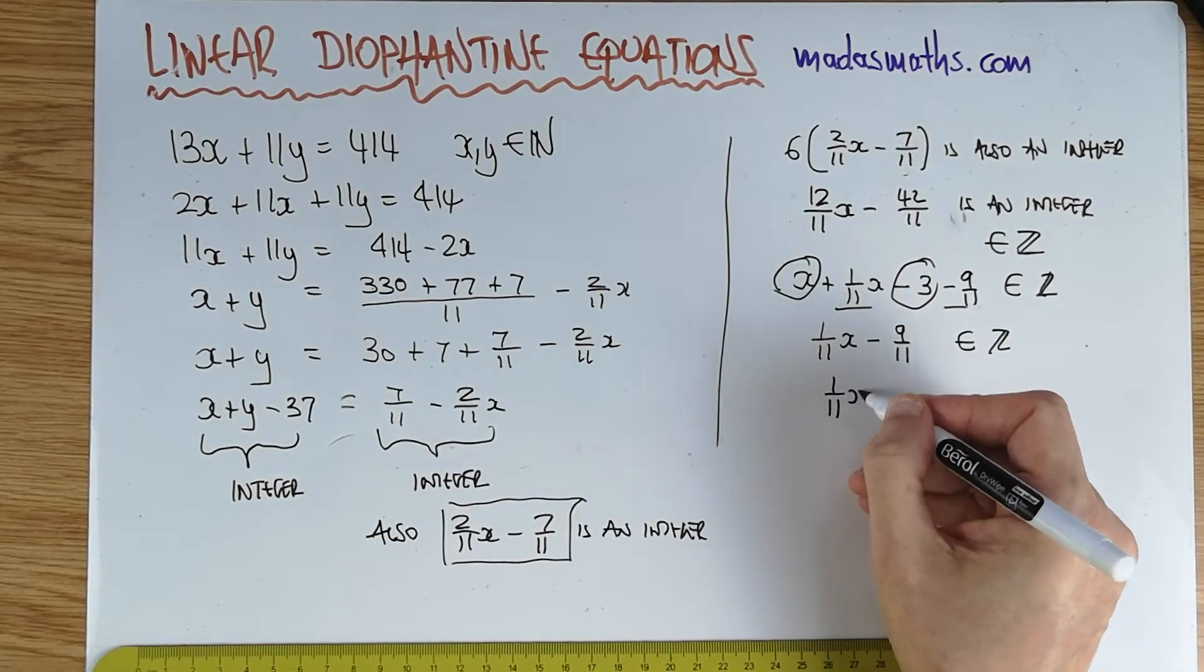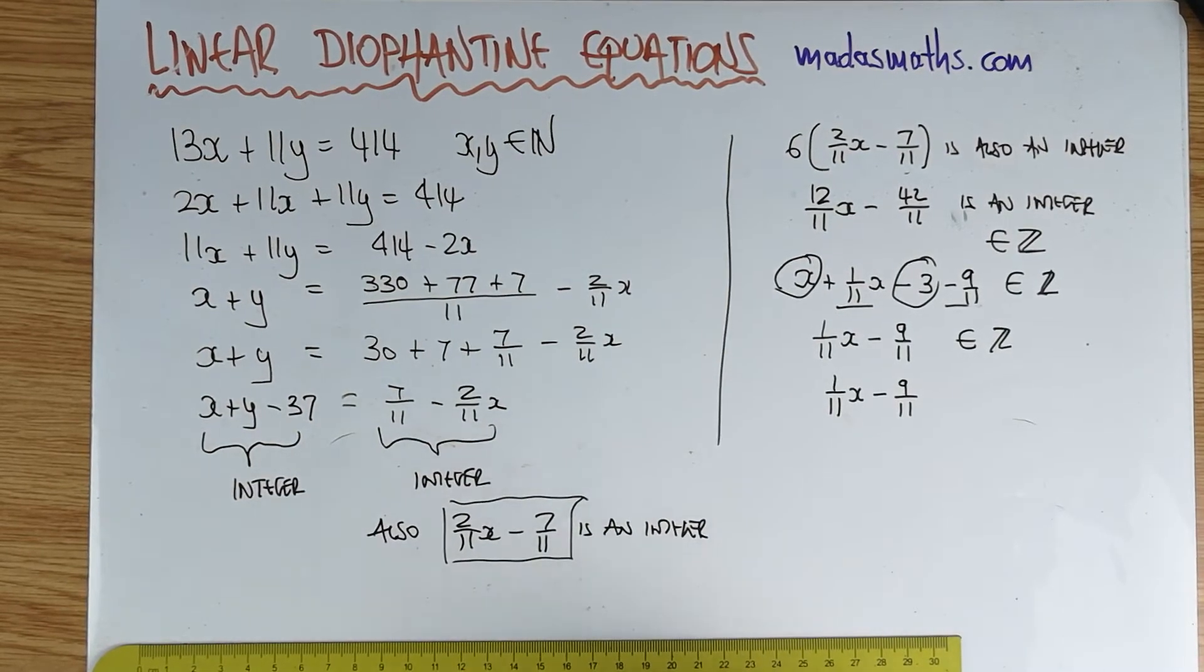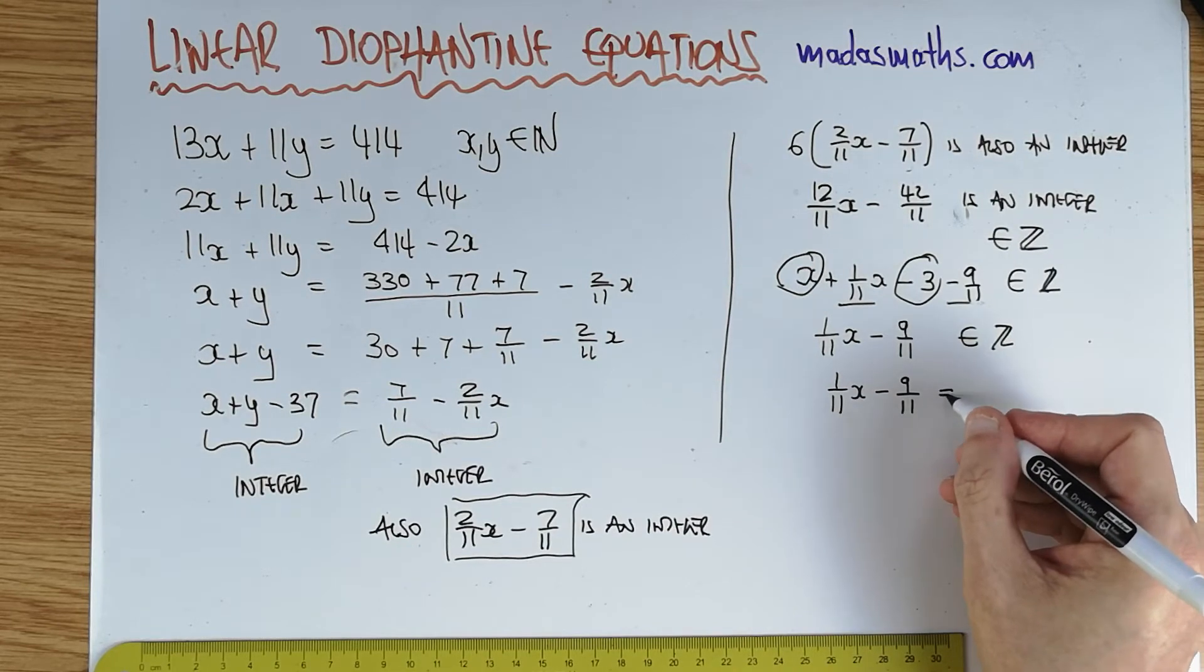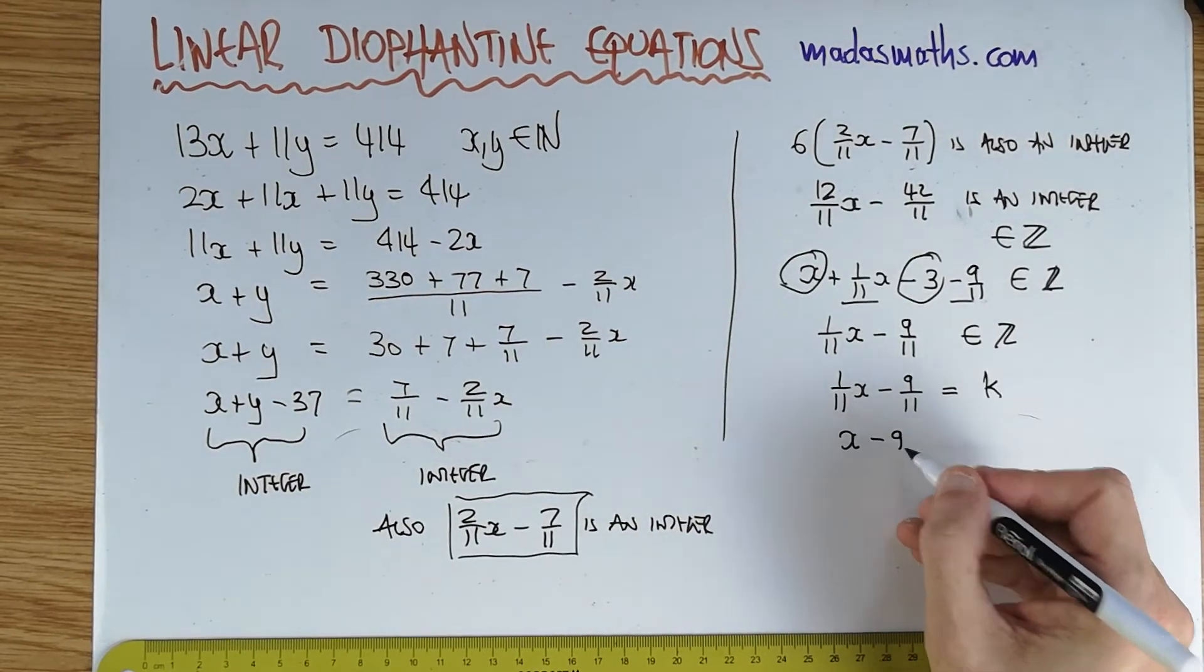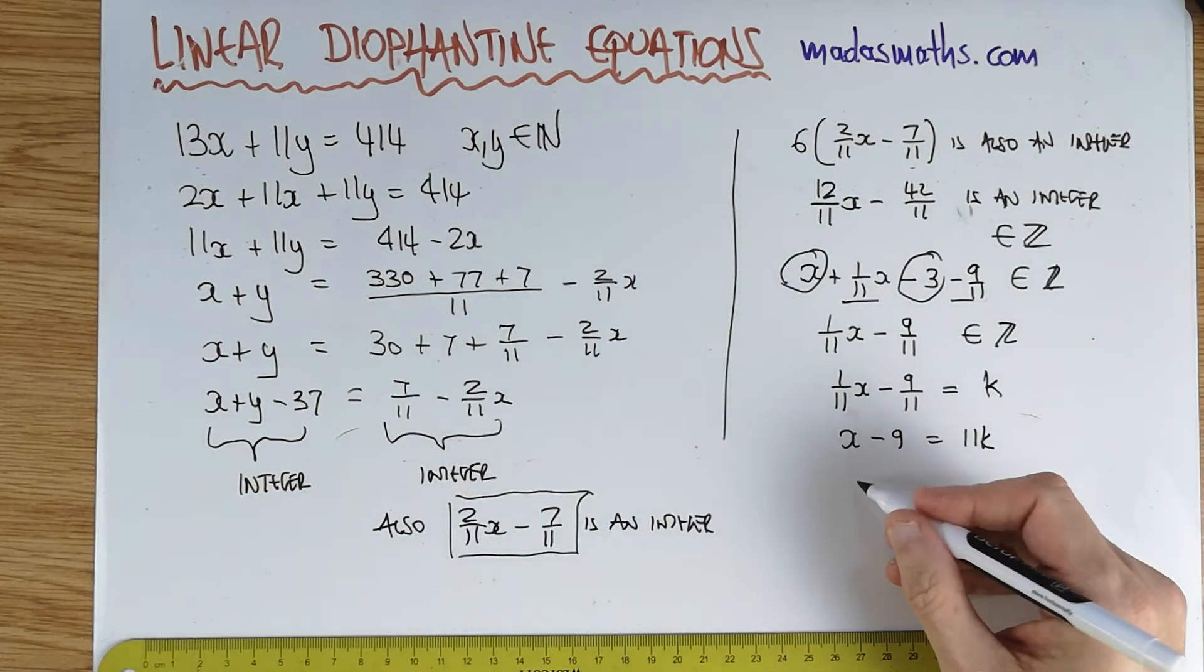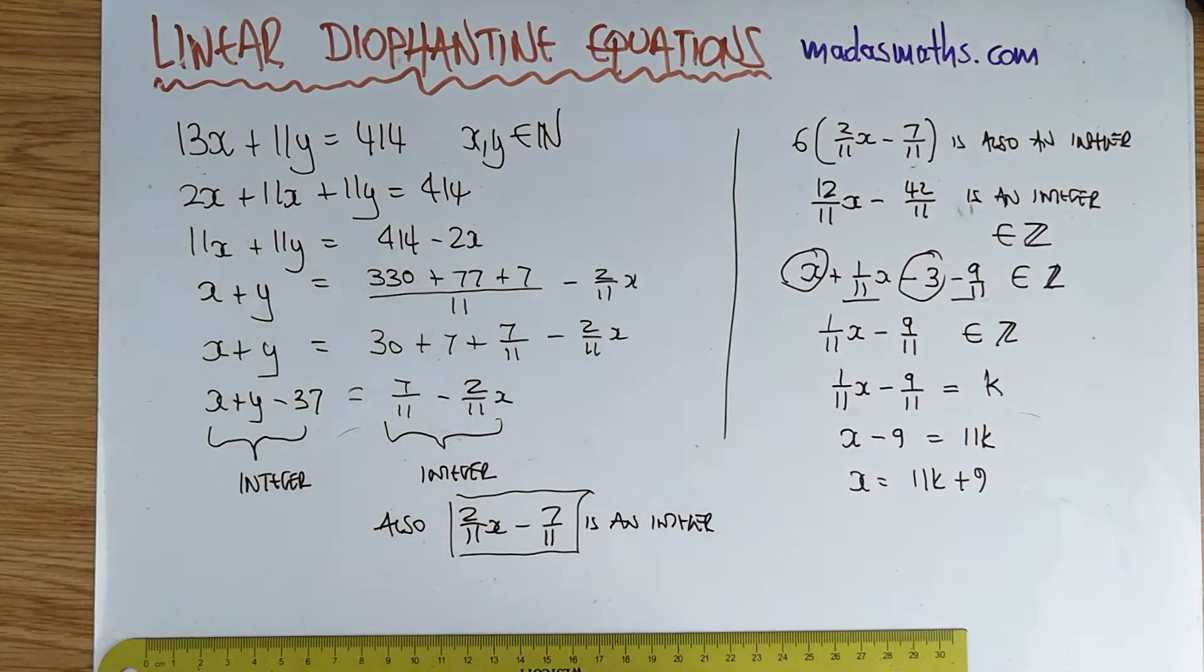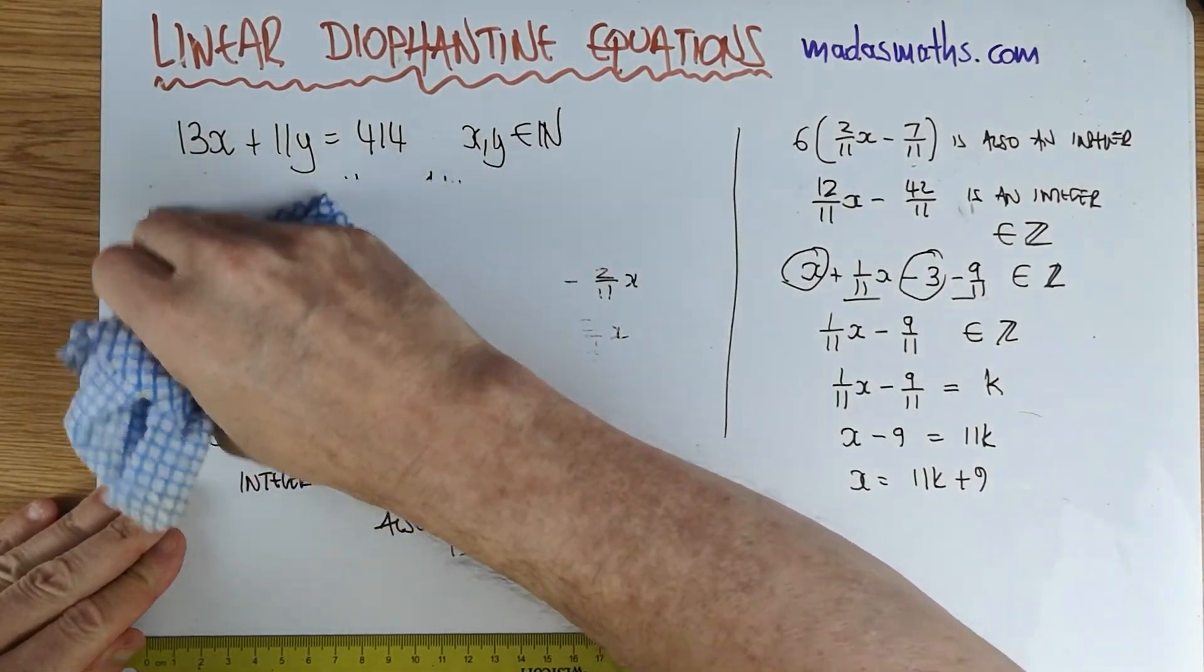So I'm going to call this integer now. So this integer now, I'm going to give it a name, and I'm going to say this integer now is k. And therefore, for my example there, I can times the 11 across, x minus 9 equals 11k. So I'm going to make some space, which I can rewrite as x equals 11k plus 9.